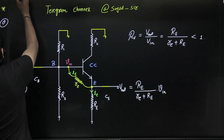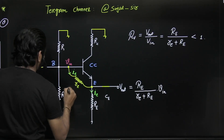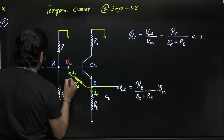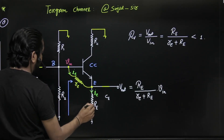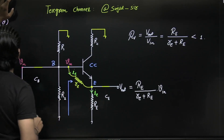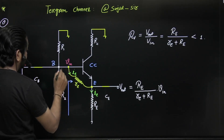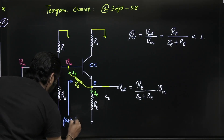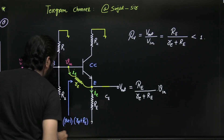Now, what about input impedance and output impedance? For input impedance seen from the base side: small re and capital RE are both connected in series, so total resistance is small re + capital RE. If you see the resistance from the base side, it will be (beta + 1) times the total resistance, which is (beta + 1) × (small re + capital RE).